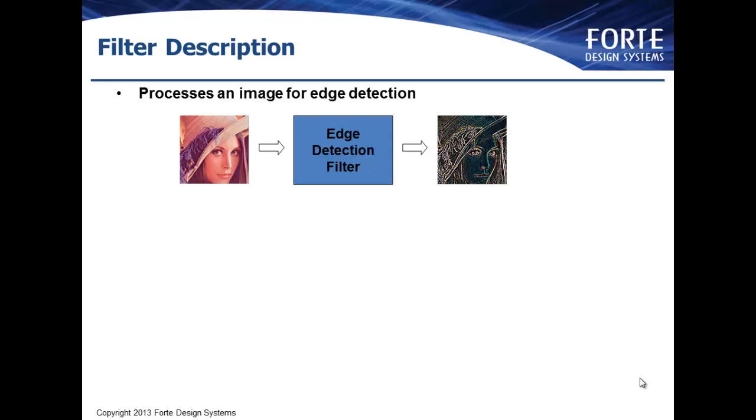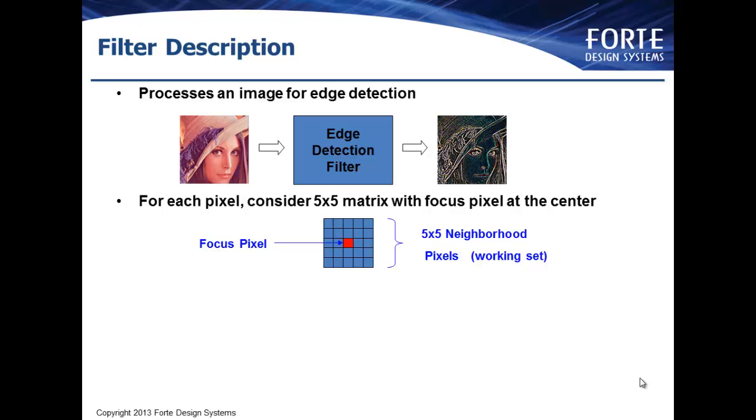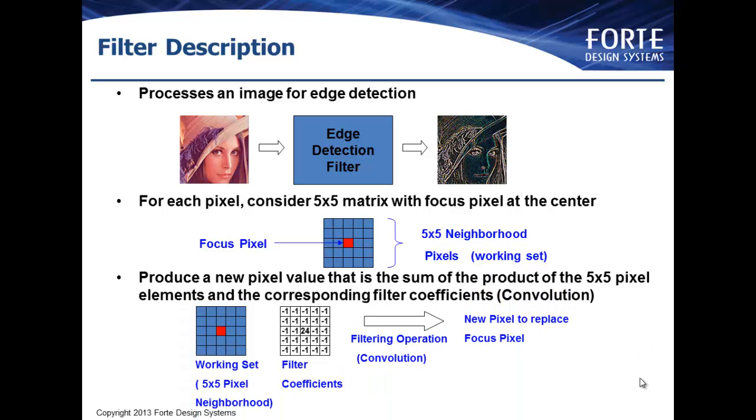The filter algorithm we are going to consider is that of an edge detection filter. This algorithm processes images either from a still camera or video camera and will create a derivative image that shows only the edges detected in the image. The way this is done is to process each pixel in the image and build a 5x5 matrix of the neighboring pixels. This matrix is called the working set. We then iterate over each value in the working set to boil it down into a single resultant pixel. This involves applying a table of filter coefficients to the working set and then clipping the values. It's worth noting that each pixel is actually a 24-bit value comprising three 8-bit values, one for each color: red, green and blue.